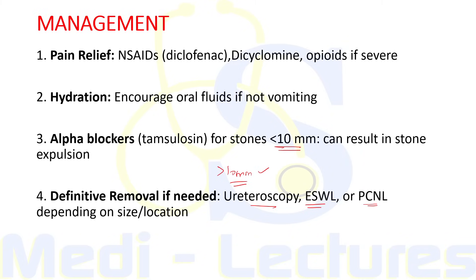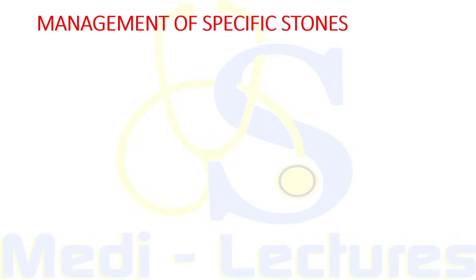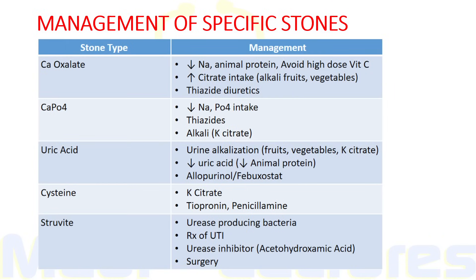If infection is present, the underlying infection must be treated. For calcium oxalate stones, the patient should take a diet low in sodium and animal protein, avoid high-dose vitamin C, take enough citrate with alkaline fruits and vegetables. We can also give thiazide diuretics, which decrease calcium excretion in urine.